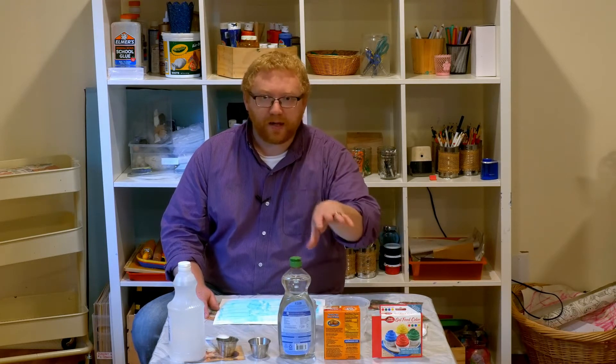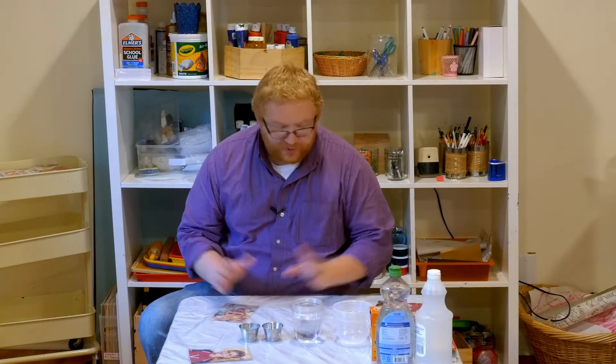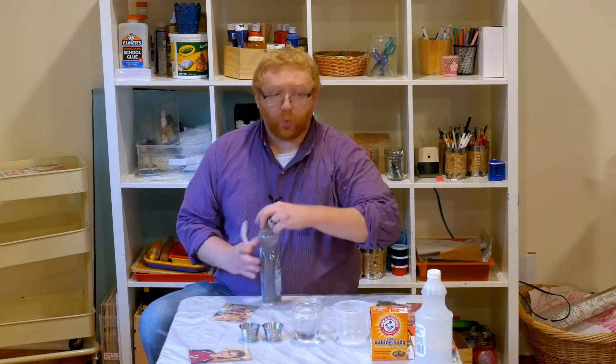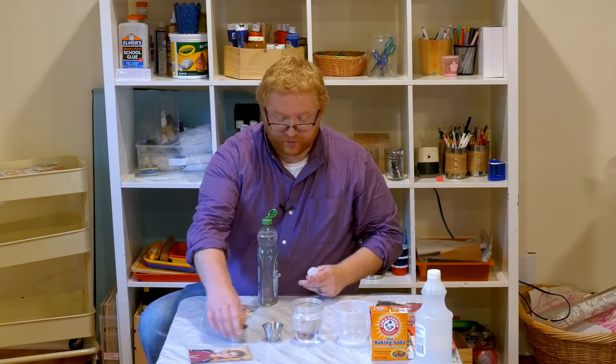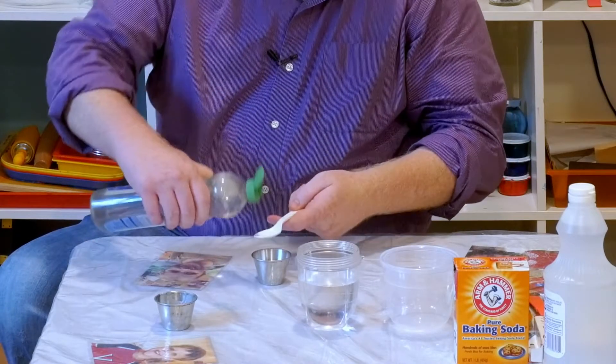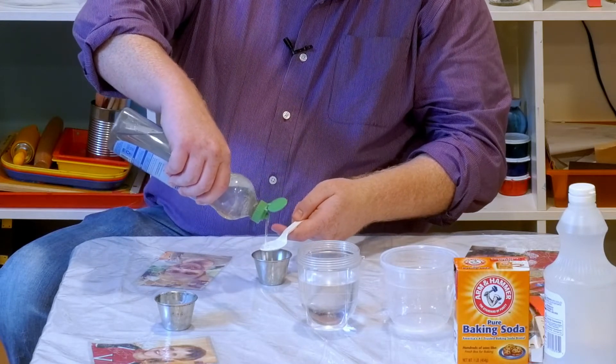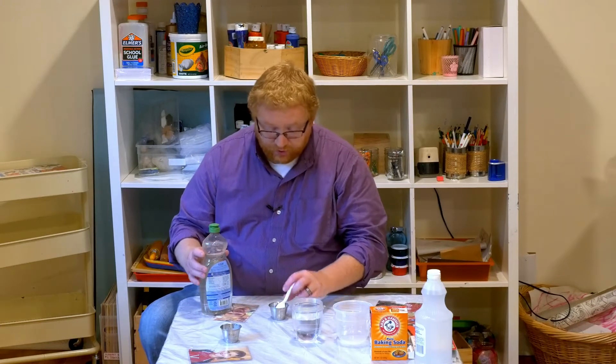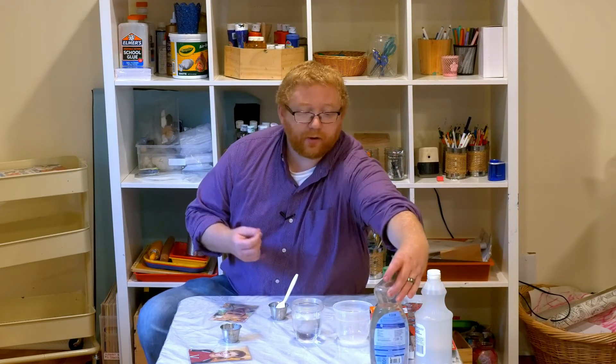So why don't you guys come along with me and we'll make our very own watercolor paint. Alright, so one of the first things we need to do is measure out our ingredients, and I'm going to start by taking one tablespoon of dish soap. You can see that I'm not really being exact in my measurements, but I am trying to do equal parts.